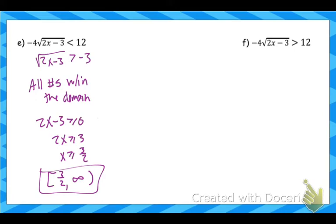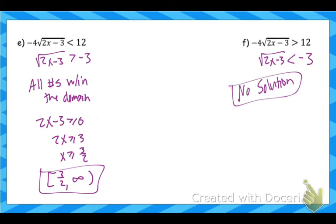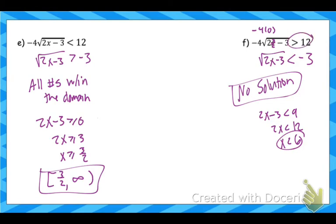The last case: divide both sides by negative 4, flip the sign, and the square root is by itself with a negative on the other side. The square root always gives a positive result, so it can never be less than a negative — this has no solution. If you tried to work it out anyway, squaring both sides gives 2x minus 3 less than 9, then x less than 6. But picking a test point like 1.5 shows negative 4 times 0 is not greater than 12, confirming everything from that path is extraneous. So as soon as you have a square root by itself with a negative on the other side, stop and recognize it means no solution.